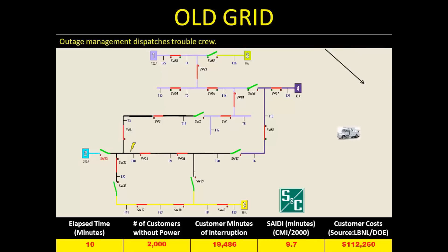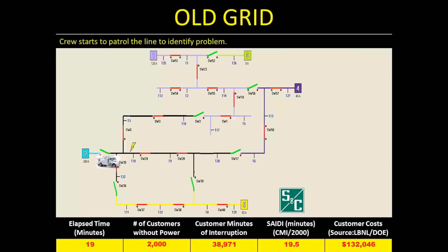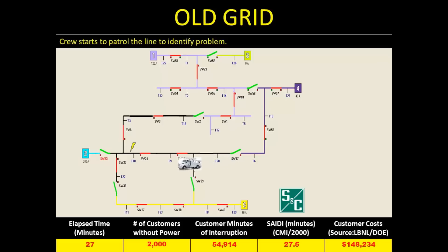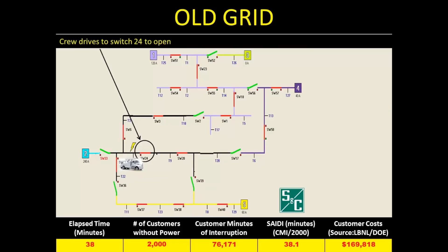Once they know that, they dispatch a crew and a truck. The truck will have trouble because traffic lights are out, so it takes longer to arrive. Once they do get there, they need to patrol the line — typically 15 to 20 miles in total length — so it takes considerable driving to find the problem. Once the problem is found, they call back to headquarters with the location and nature of it. Headquarters then figures out how to isolate the problem, which requires opening all the switches around it.